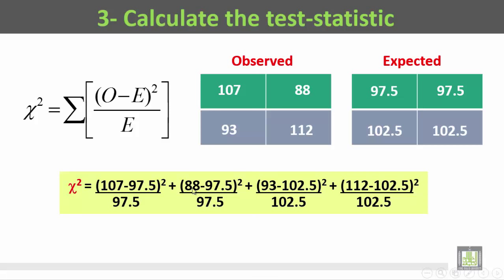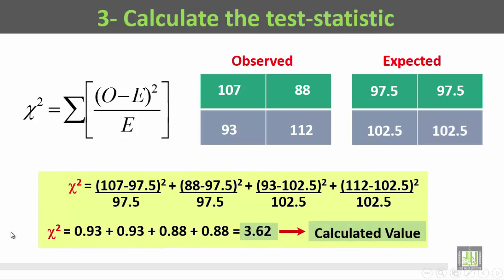The chi-square equals: (107 − 97.5) squared divided by 97.5, plus (88 − 97.5) squared divided by 97.5, plus (93 − 102.5) squared divided by 102.5, plus (112 − 102.5) squared divided by 102.5. The chi-square is equal to 0.93 plus 0.93 plus 0.88 plus 0.88.